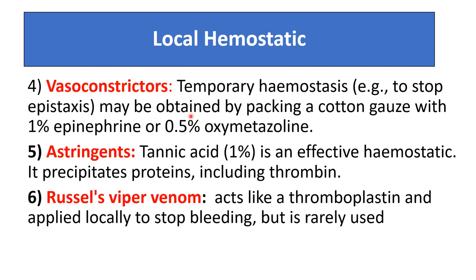Vasoconstrictors such as adrenaline act as temporary hemostatics to stop epistaxis, obtained by packing cotton gauze with 1% epinephrine or 0.5% oxymetazoline. Astringent tannic acid 1% is an effective hemostatic that precipitates protein including thrombin. Arachidic acid hypervenome acts like thromboplastin and is applied locally to stop bleeding, but is rarely used.